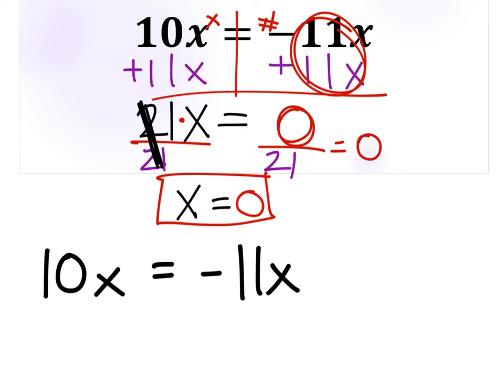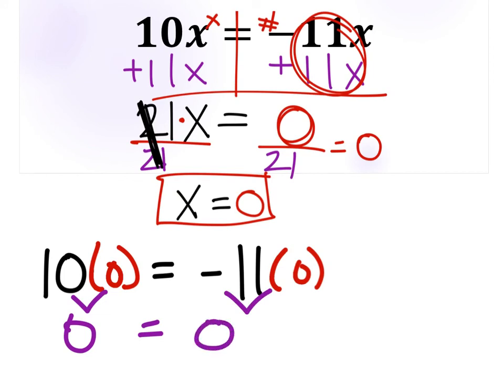I don't recommend stopping there because, especially on a test, you want to make sure your answer is correct. Since we think x equals zero, I'm going to replace both x's with zero. On the left I've got 10 times zero which is zero, and this equals negative 11 times zero which equals zero. This checks out, which is a good way to know that our answer is correct - x is zero.